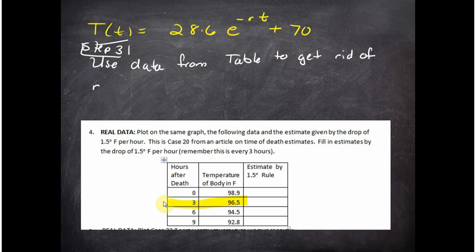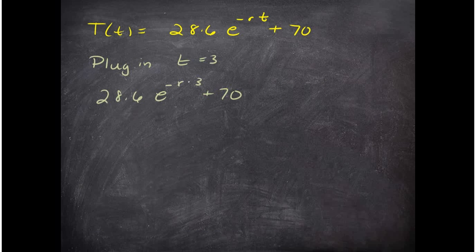I'm going to take some real data. I'm going to take another point, not time equals zero. So I took time equals three, and at time equals three I took this 96.5. And I'm going to go through the same process. At t equals three, I know that the y value has to be 96.5.